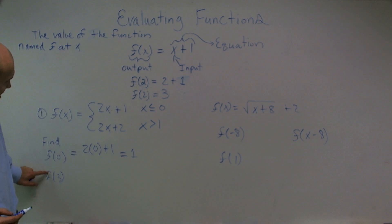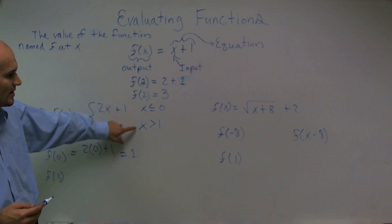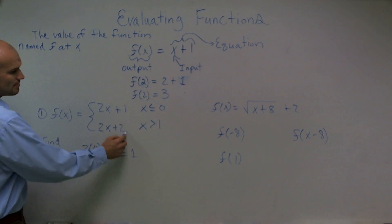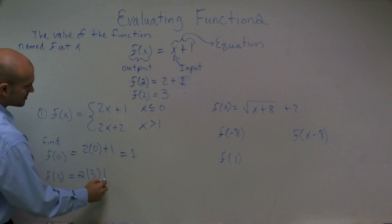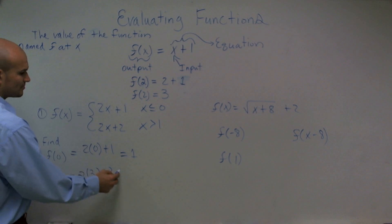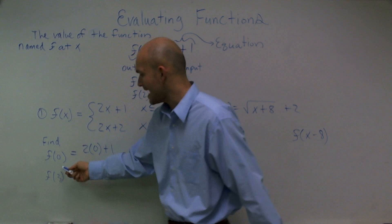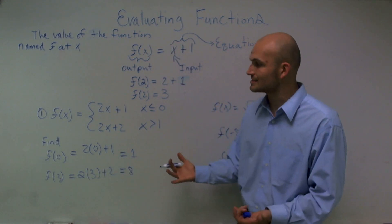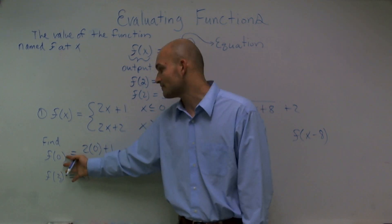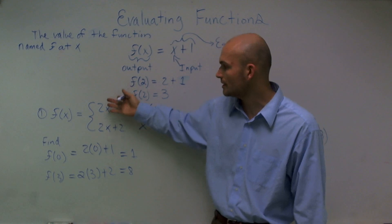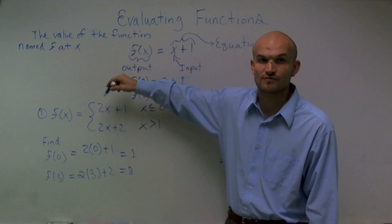For the next one, find the value of my function f at 3. We look at my input value and say 3 is larger than 1, so I'm going to use my bottom function. So I have 2 times 3 plus 2 — 2 times 3 is 6, plus 2 equals 8. The value of my function f at 3 equals 8. Just remember: whenever you have your input value, make sure you plug it in for all values in your function, and with piecewise functions, make sure you determine which function to use.